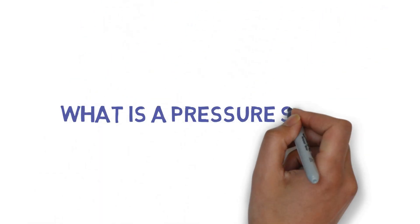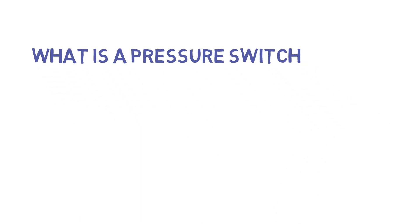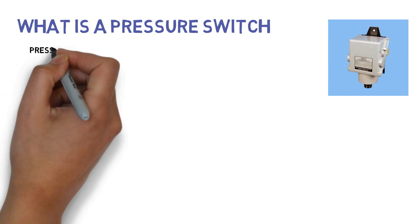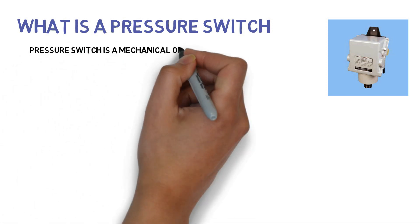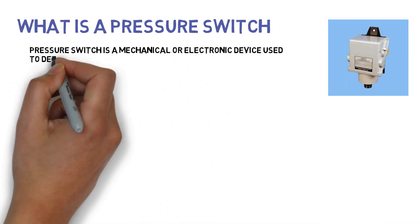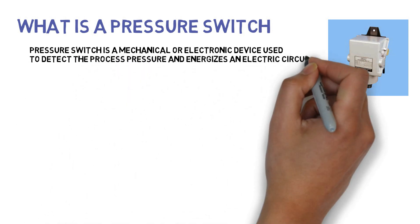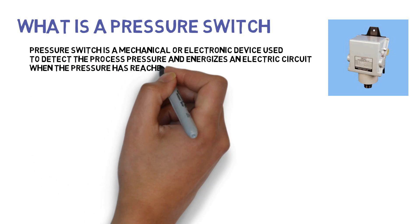What is a pressure switch? A pressure switch is a mechanical or electronic device used to detect the process pressure and energizes an electric circuit when the pressure has reached its set point.